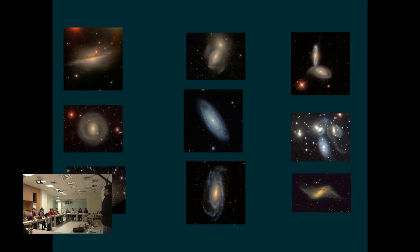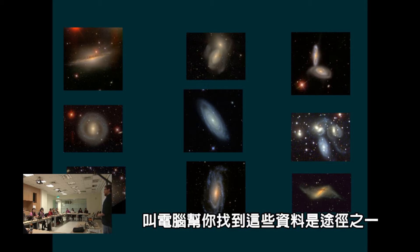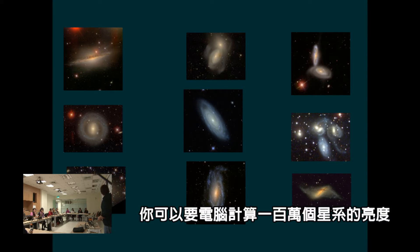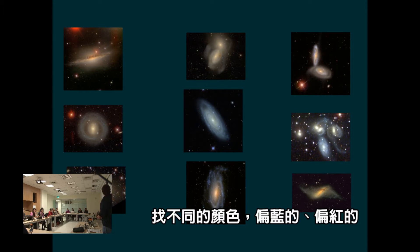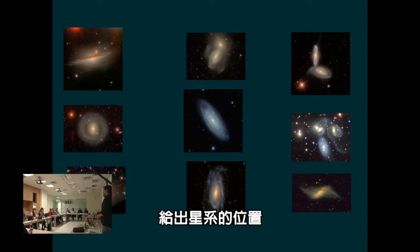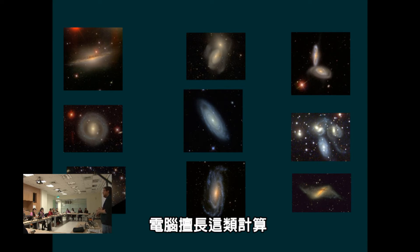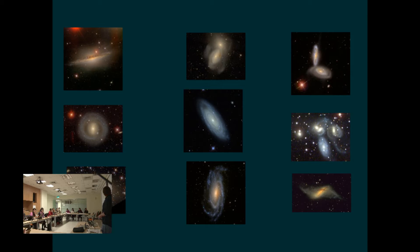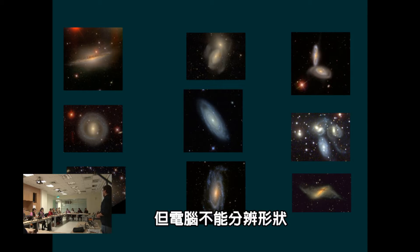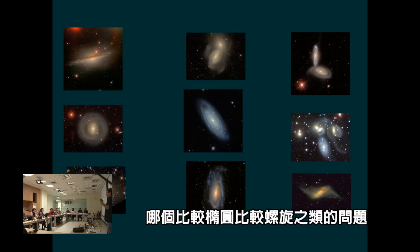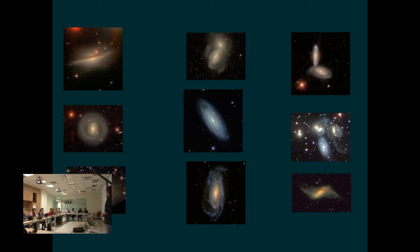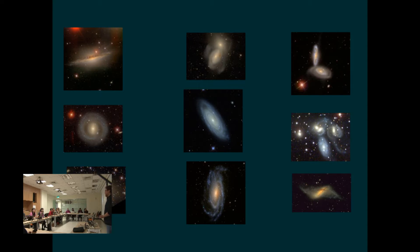One of the things you can do is get computers to tell you some of that data. You can tell the computer: here's a million images of galaxies — for every single one, tell me how red the galaxy is, what color it is, where it was in the night sky. Computers are great at automating analyses like that. But if you ask a computer what shape is this galaxy, or is this galaxy more spirally than this one, it's really hard to do. It's very hard to get computers to automate that kind of task, and that's a real problem.